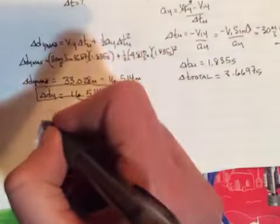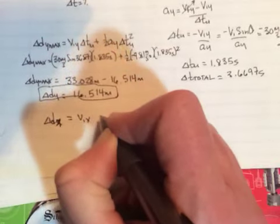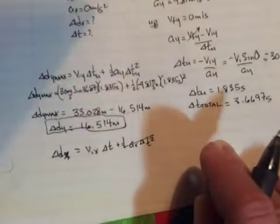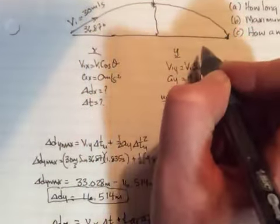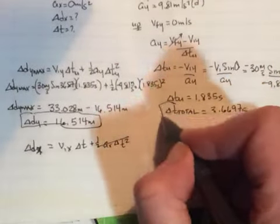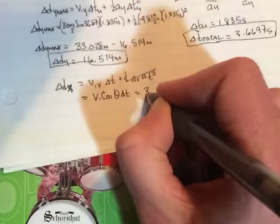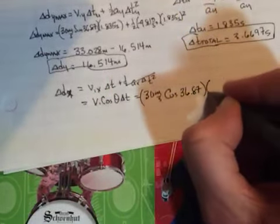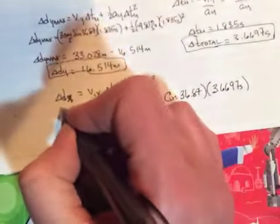Last question asks, what is the range, delta DX? So it'll be VIX, delta T, one half, AX, delta T squared. The AX term still goes to 0. This time I want the range. And so because it's the range, it's the full distance. So I'm going to use my full time here. I'm going to use this guy. And so it just becomes VI cos theta delta T. In other words, 30 meters per second cos of 36.87 times 3.6697 seconds. And then you just punch it in and you get your range.